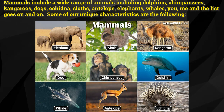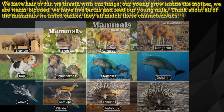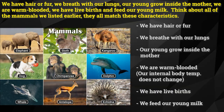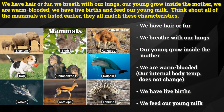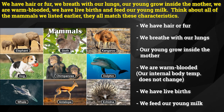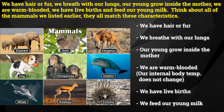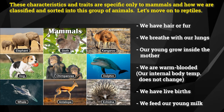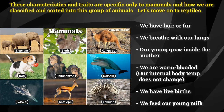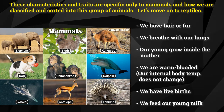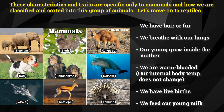Some of our unique characteristics are the following: we have hair or fur, we breathe with our lungs, our young grow inside the mother, we are warm-blooded, we have live births, and we feed our young milk. Think about all the mammals we listed earlier — they all match these characteristics. These characteristics and traits are specific only to mammals and how we are classified and sorted into this group of animals.